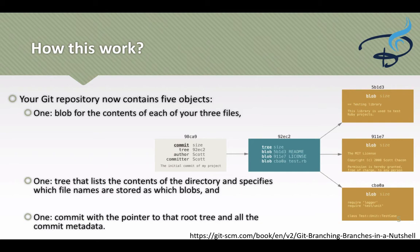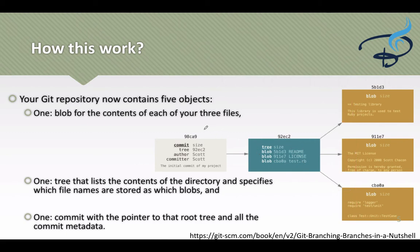You have made changes in three files and committed them — now you have five objects in your repository. Three are simply the files which have changed. One is the tree file, which has information about these three files: how they look, their structure, name, size, etc. And obviously the commit object, which has the size, author name, message and these things. So you have five objects in your repository for a single commit.